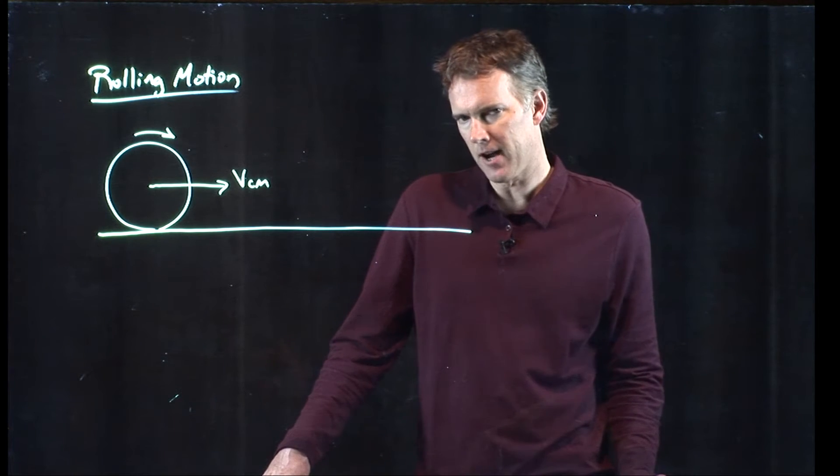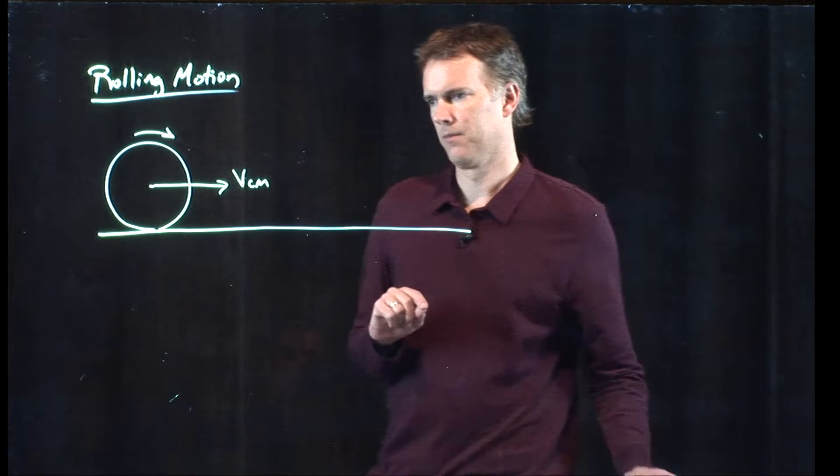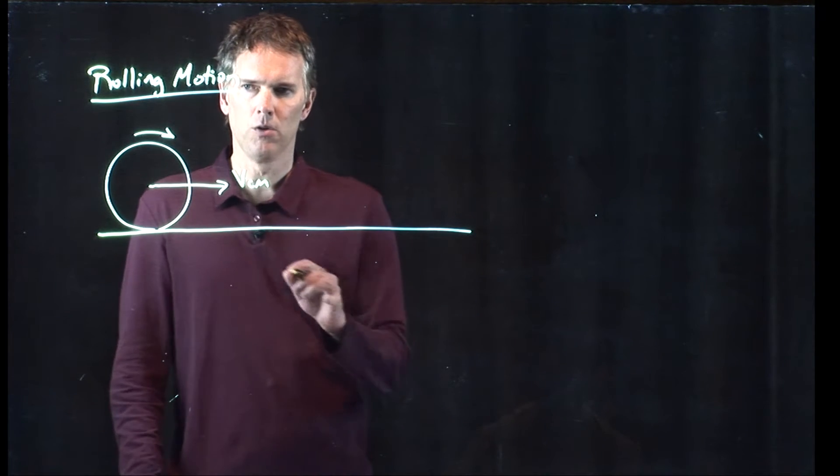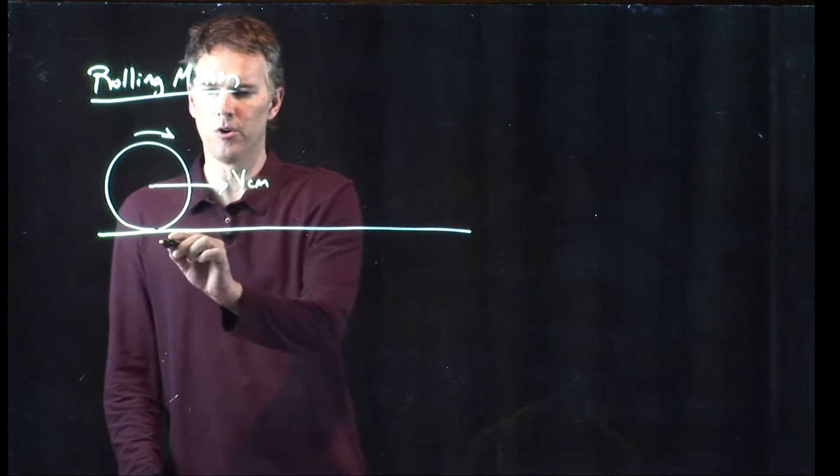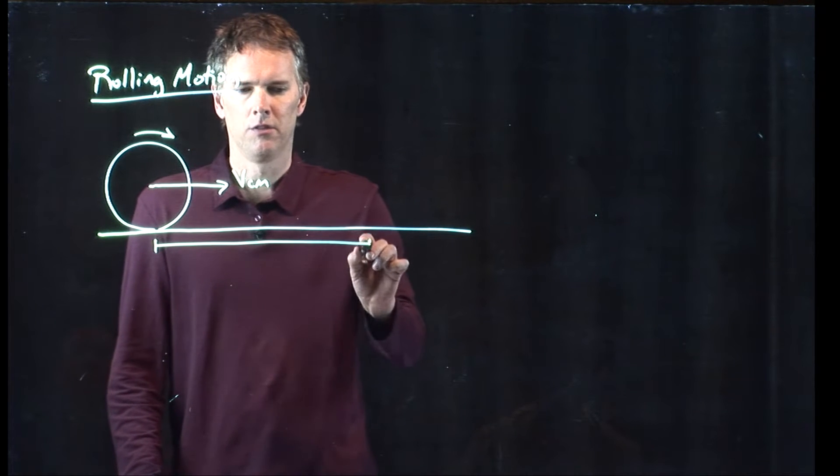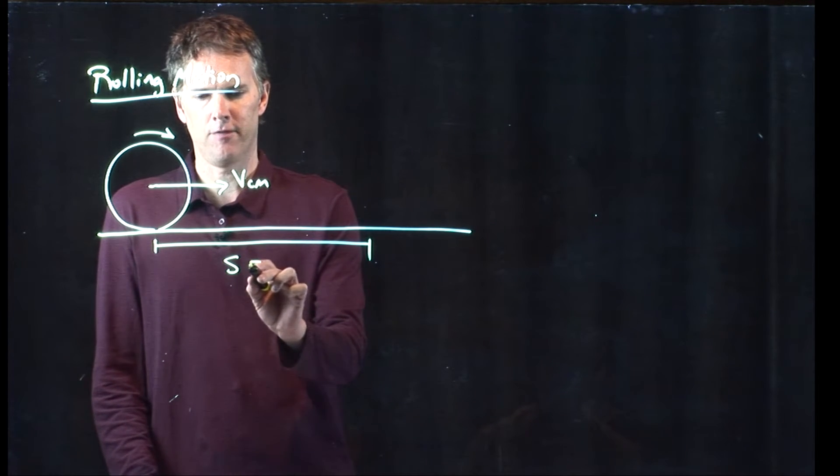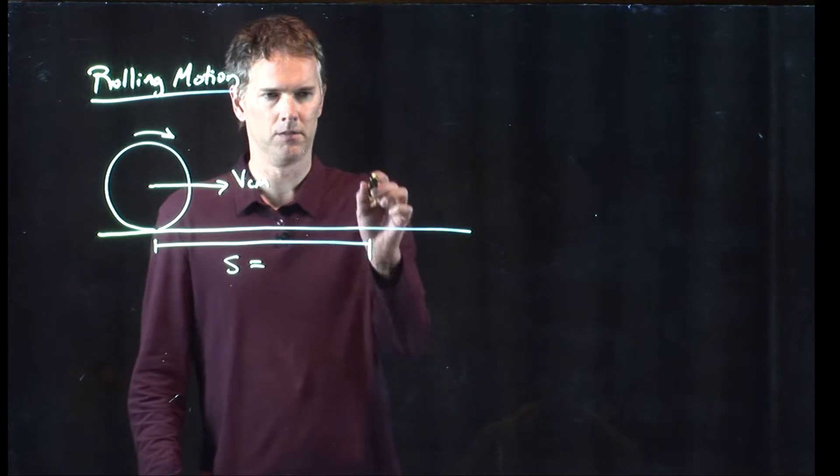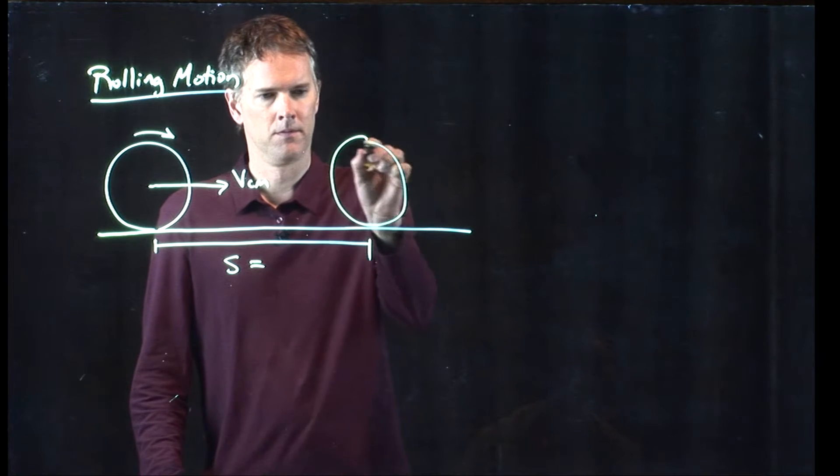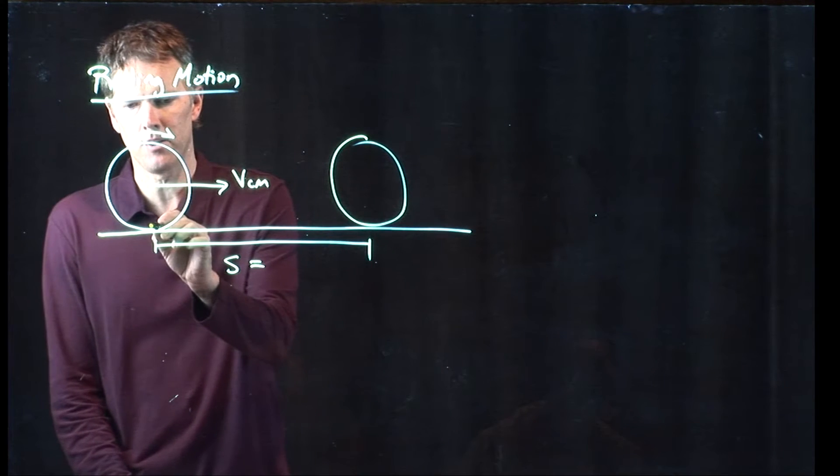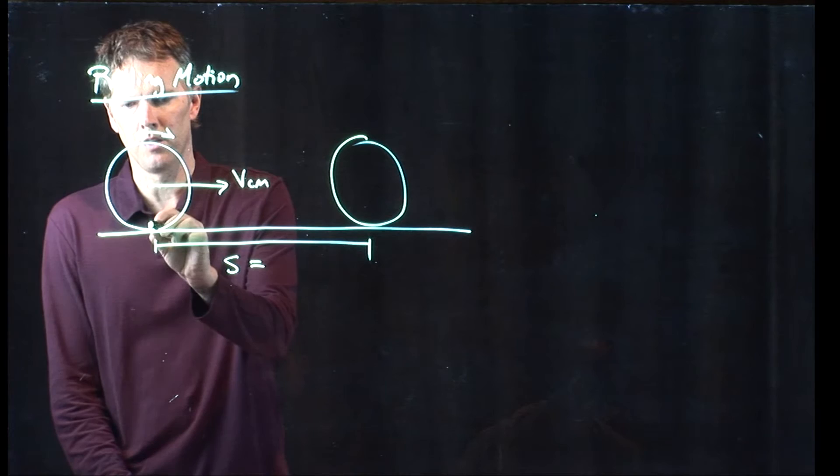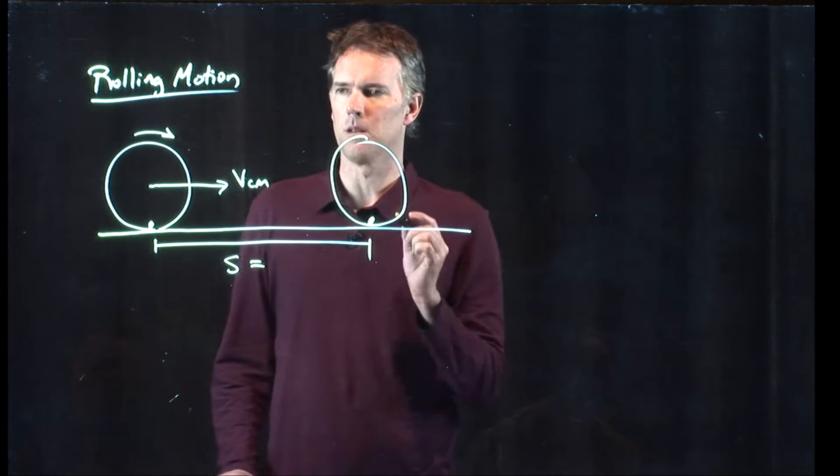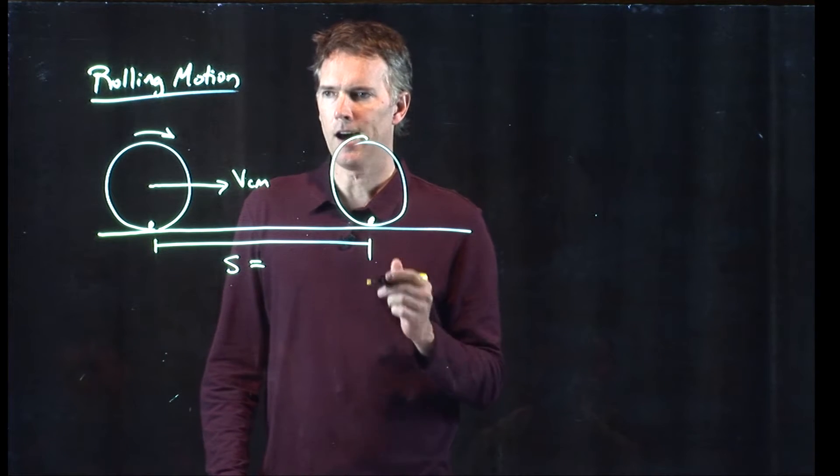Now let's see if we can figure out the relationship between the two. When the wheel rolls along and it goes one full circumference, how far has it gone in terms of linear distance? If I mark the tire here with a spot, then go until that spot comes back down to the bottom, how far have we gone?